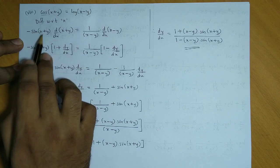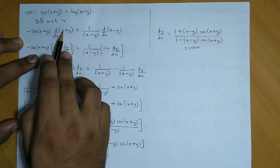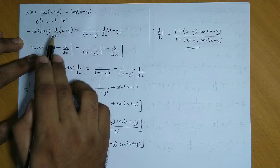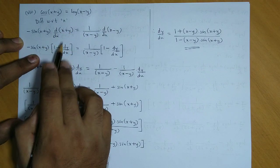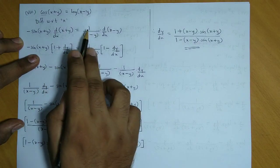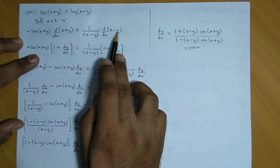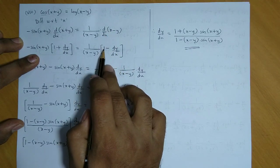Next step, minus sin x plus y, this is as it is. Now here we take derivative of x and derivative of y. Now derivative of x is 1, plus derivative of y, that is dy by dx. On the right hand side, 1 upon x minus y. Again, we take derivatives of both: x's derivative is 1, and y's derivative will be minus dy by dx.